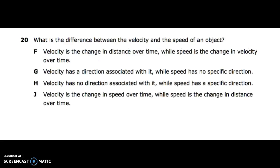Number twenty: what is the difference between the velocity and the speed of an object? F: velocity is the change in distance over time, while speed is the change in velocity over time. G: velocity has a direction associated with it, while speed has no specific direction. H: velocity has no direction associated with it, while speed has a specific direction. J: velocity is the change in speed over time, while speed is the change in distance over time.